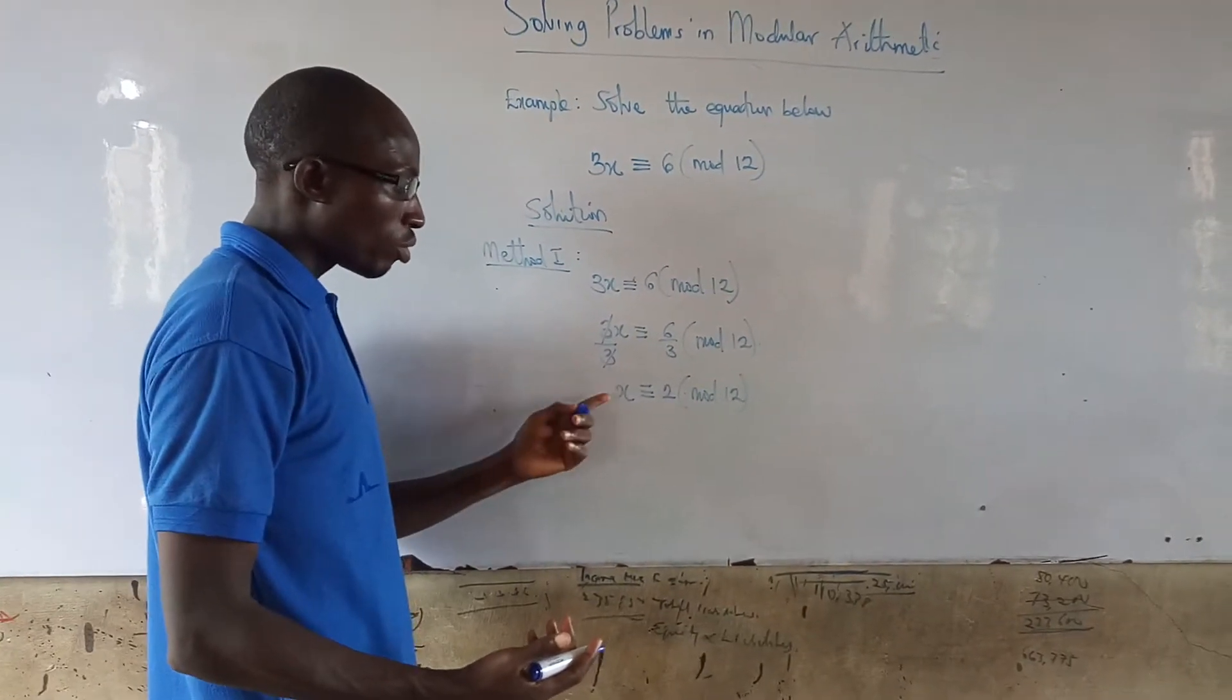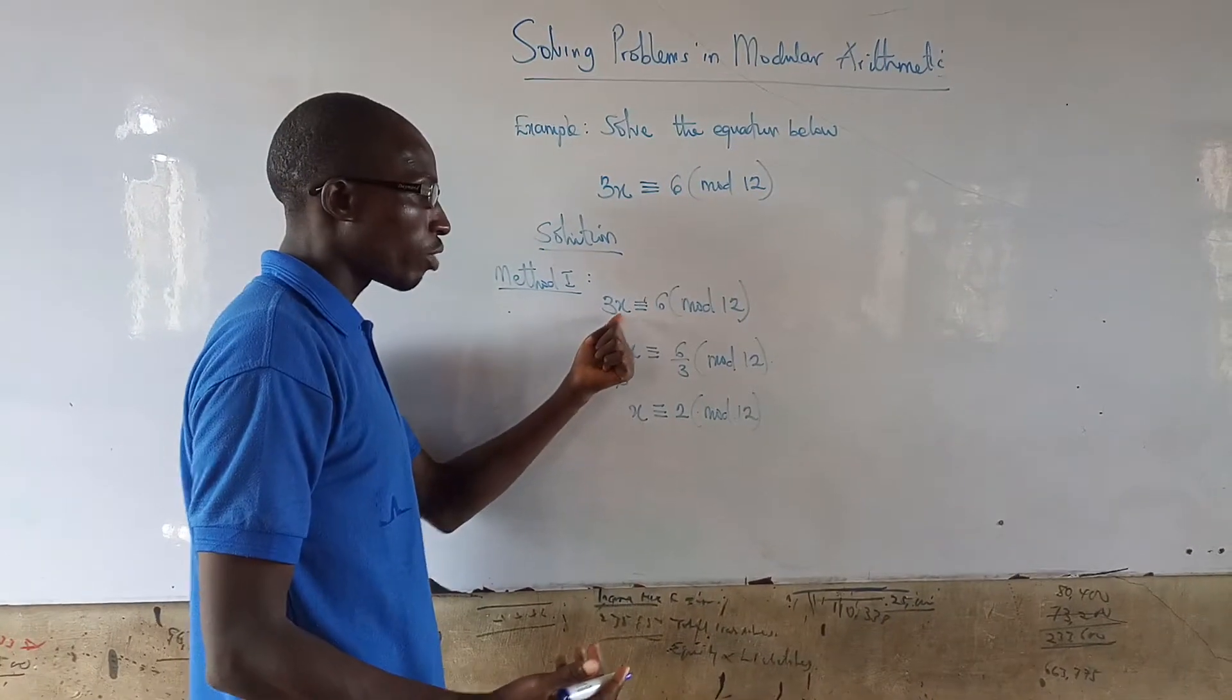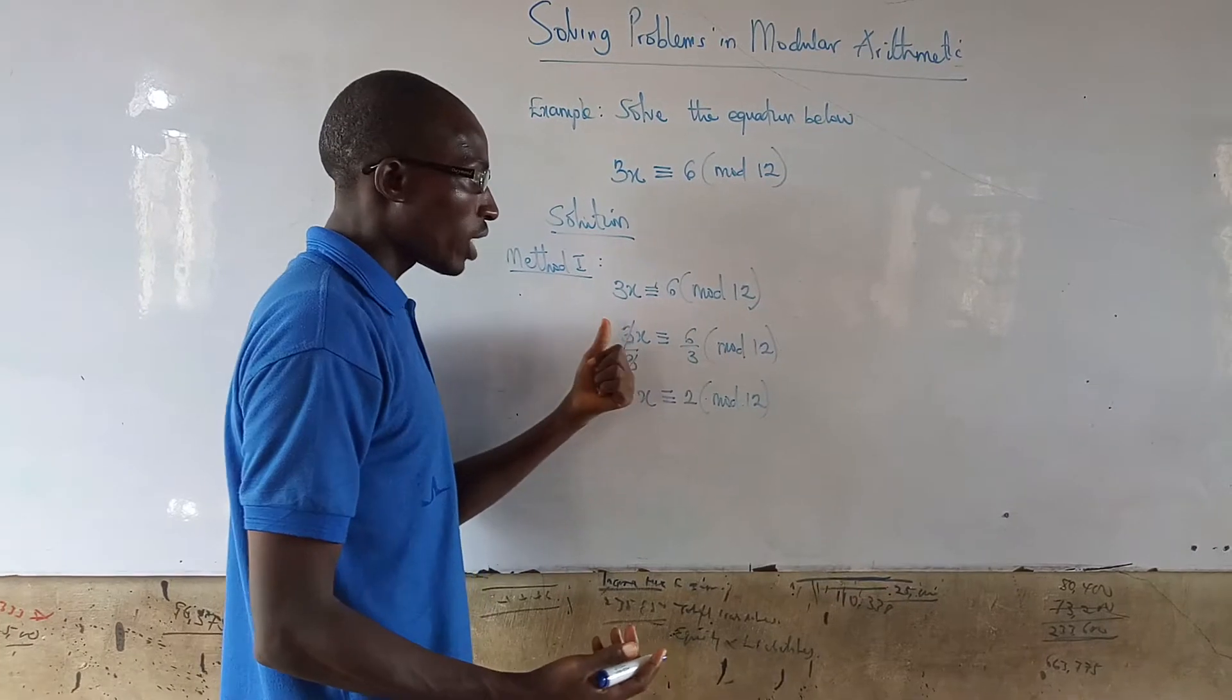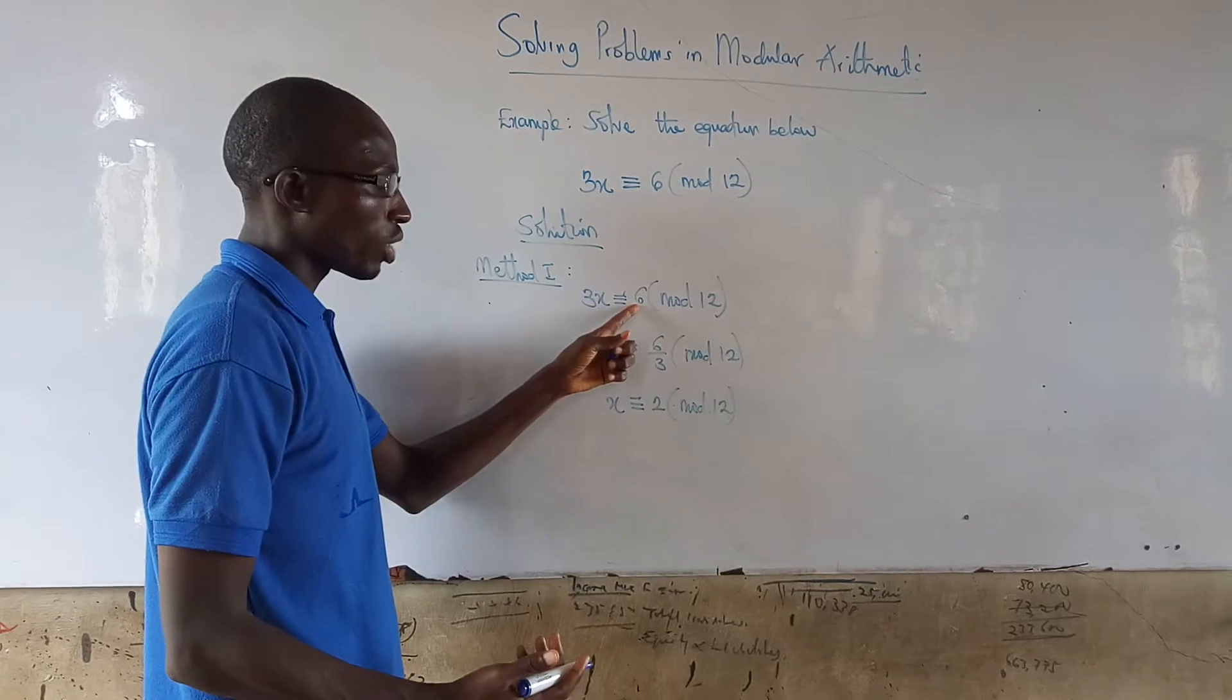But before you be able to do this, you should be able to check whether the GCD of the coefficient of x and 12, whether the GCD of this value have something to give it what you have here.